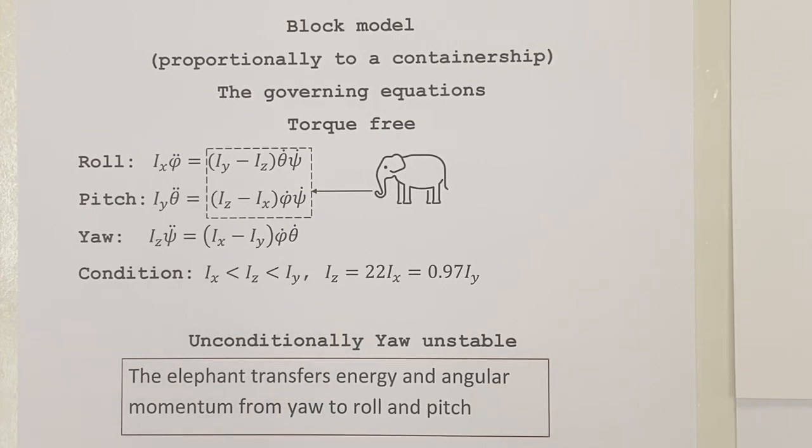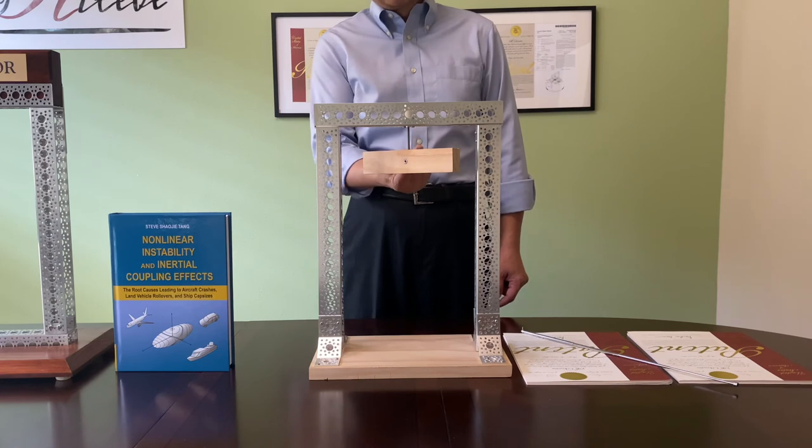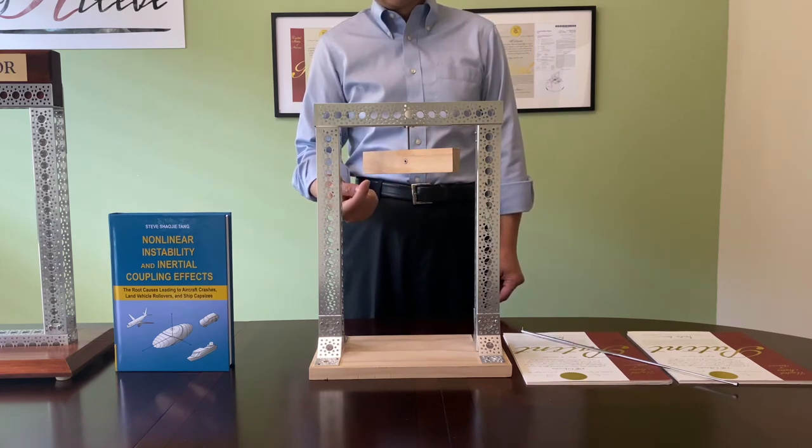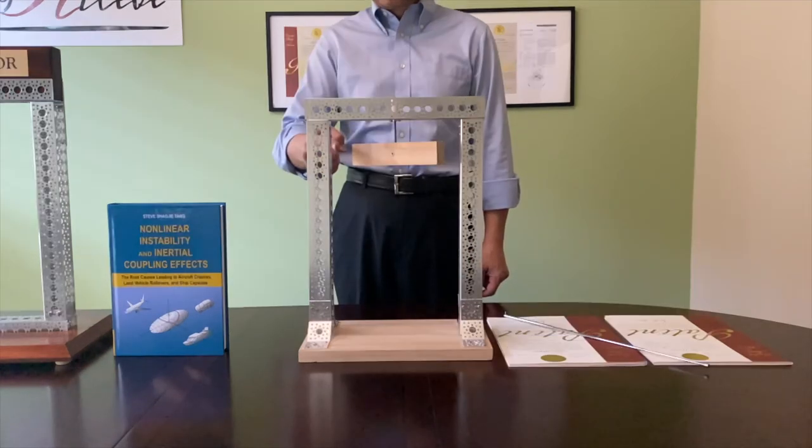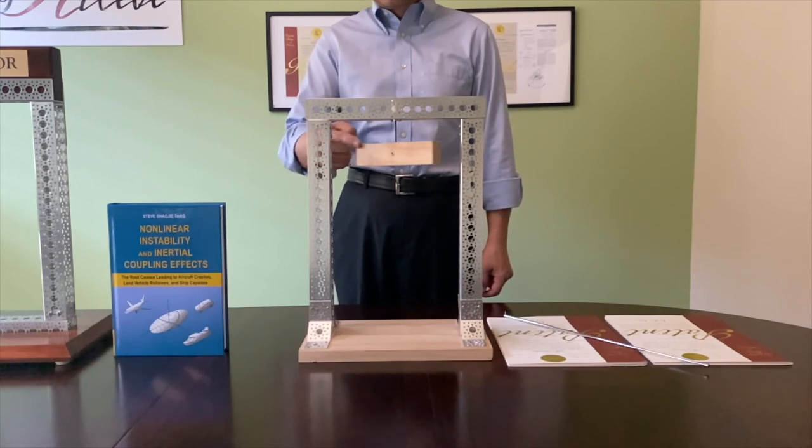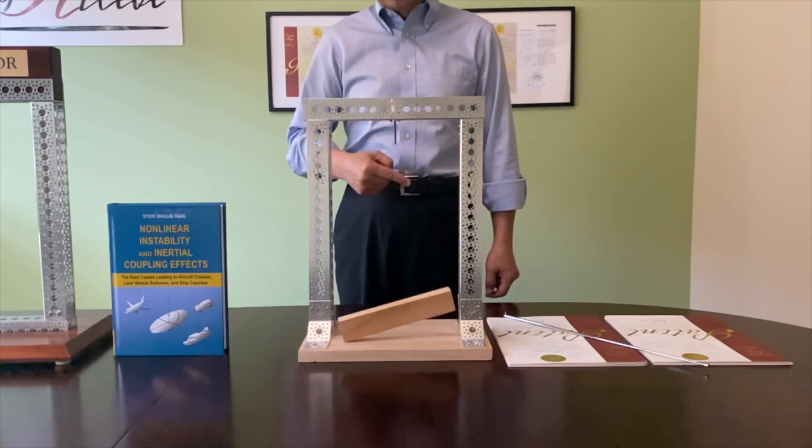Then, this block will have an unconditionally unstable yaw phenomenon. This phenomenon says that the elephant always transfers energy and angular momentum from yaw to roll and pitch. Let me demonstrate this phenomenon. I will rotate this block in yaw direction and let it free fall from the screw. I will show the test in normal speed first, then in slow motion. When this block falls free from the screw, it keeps rotating in yaw direction. Meanwhile, it always transfers energy from yaw to roll and lands on the bottom sideways.